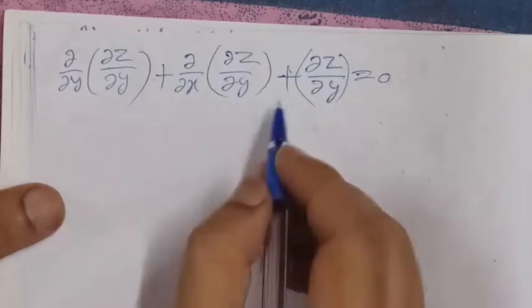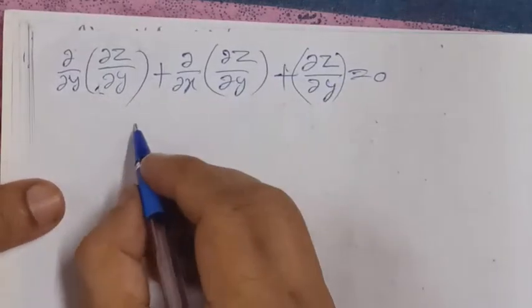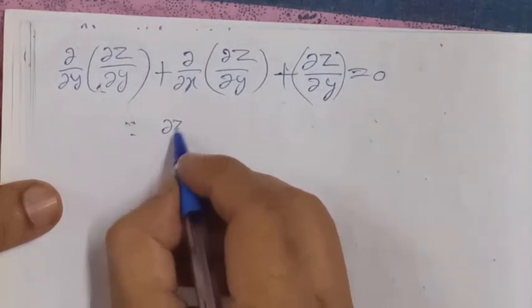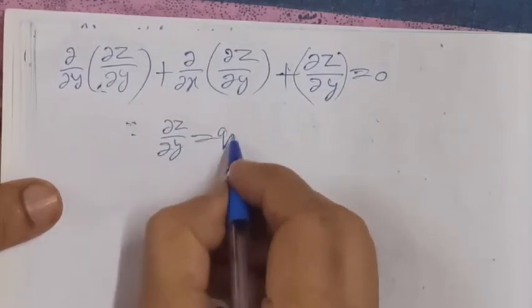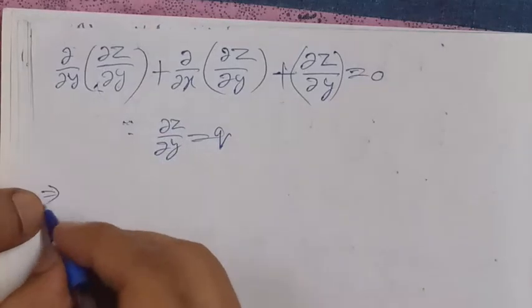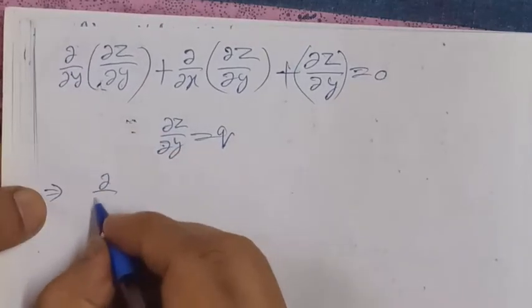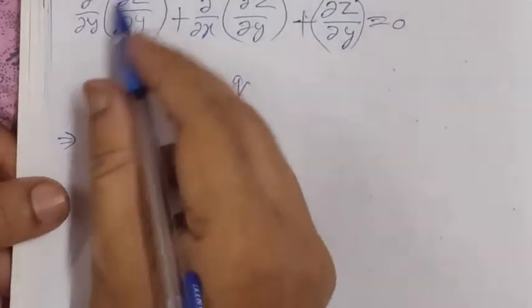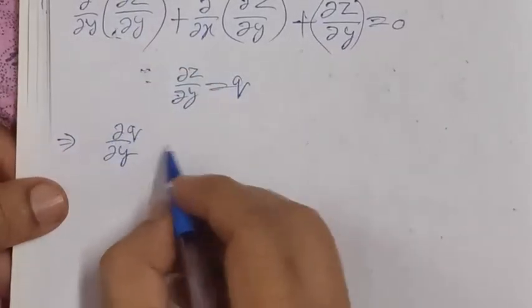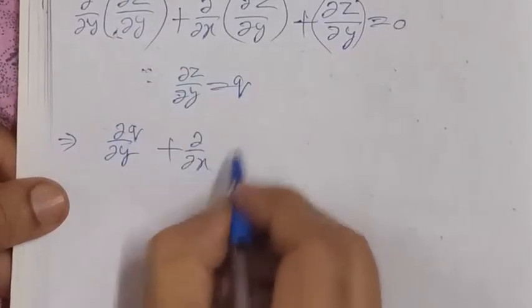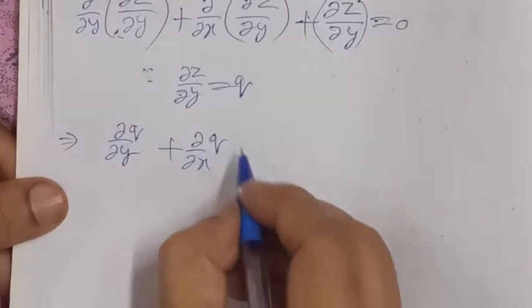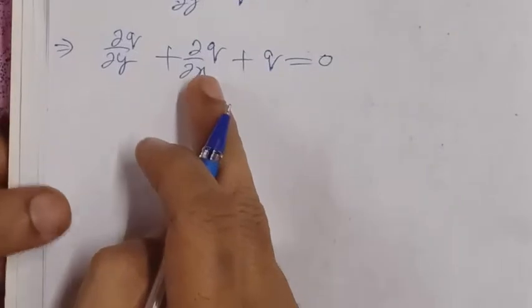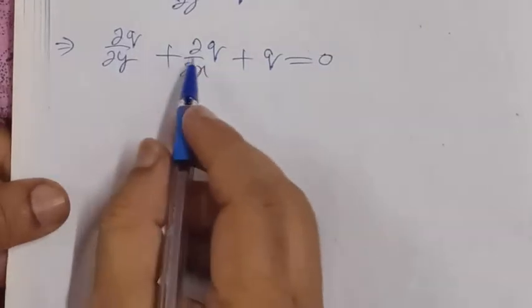We can break it down. Since del z over del y is q, let's put q here to make it shorter and easier to understand. So this value is q. We get del q over del y plus del over del x of q plus q equals zero.